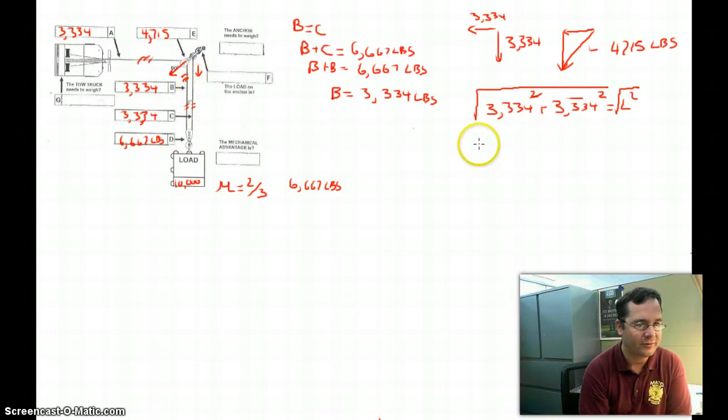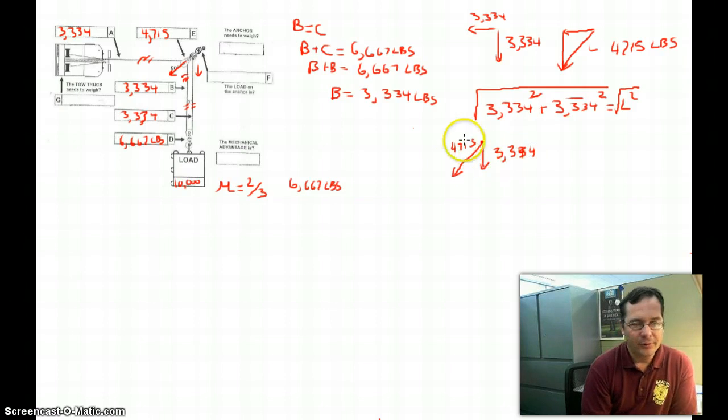So we have to further compose vectors. I've got this vector, which is 4,715 pounds, and then I have this vector, which is 3,334 pounds. So how do I compose those? It's the same process. I'm going to slide them head to tail.